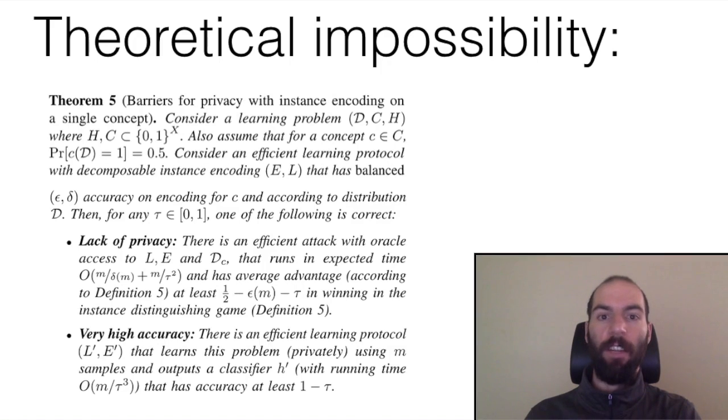Then, we give a number of theoretical barriers and prove that for a weaker definition of privacy, it's not possible to have a model that's both accurate and private.